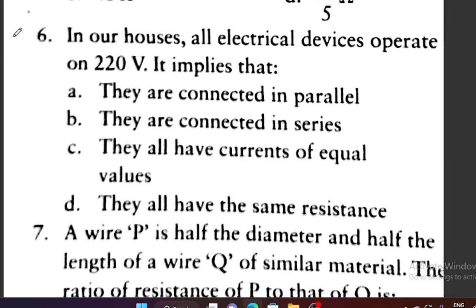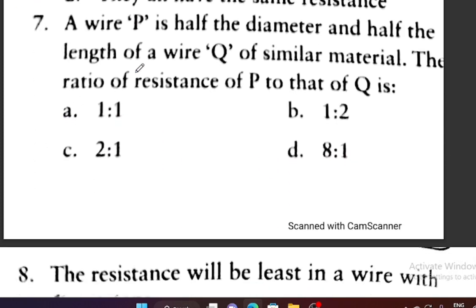Question number 6: In our houses all electrical devices operate on 220 volts — yeh kya imply karta hai? They are connected in parallel, in series, they all have equal current values, or they all have the same resistance? Option A is correct — they are all connected in parallel, so all devices have the same potential difference.